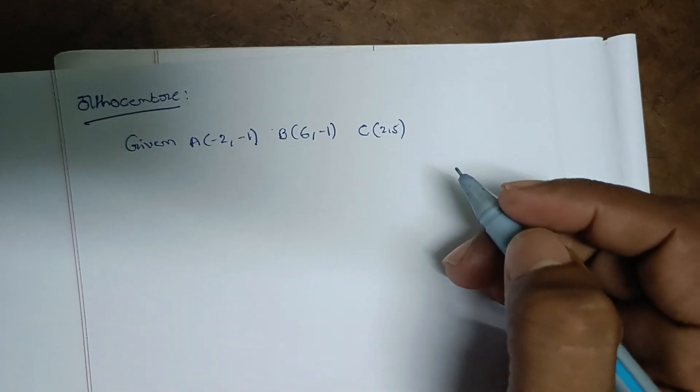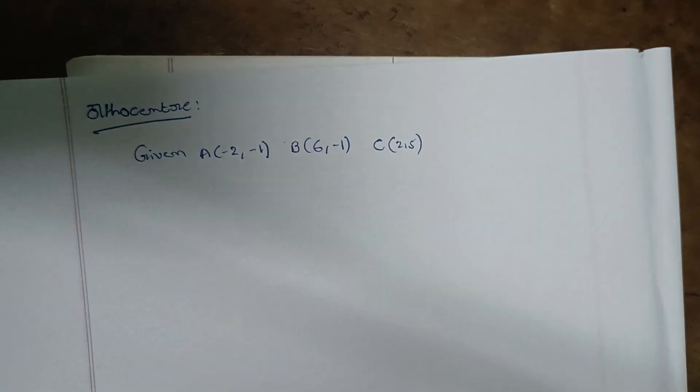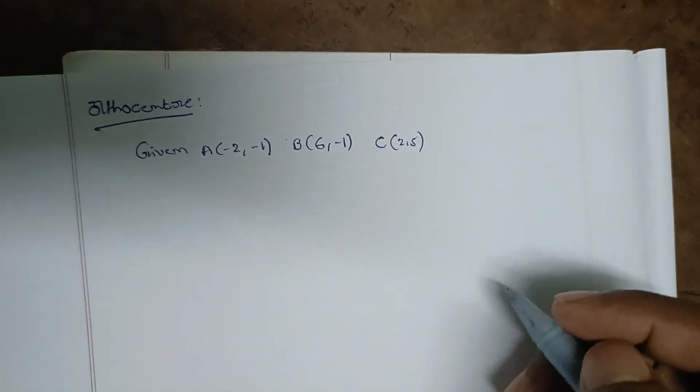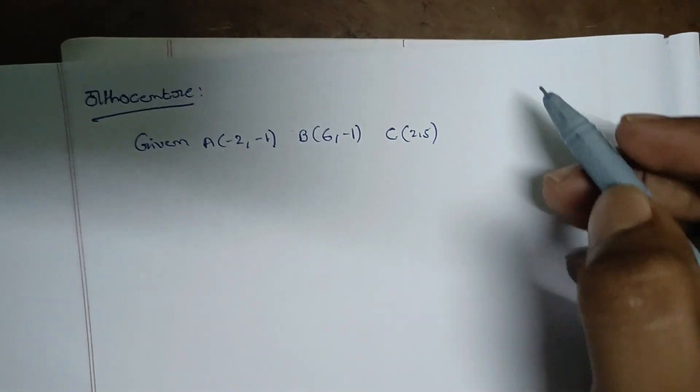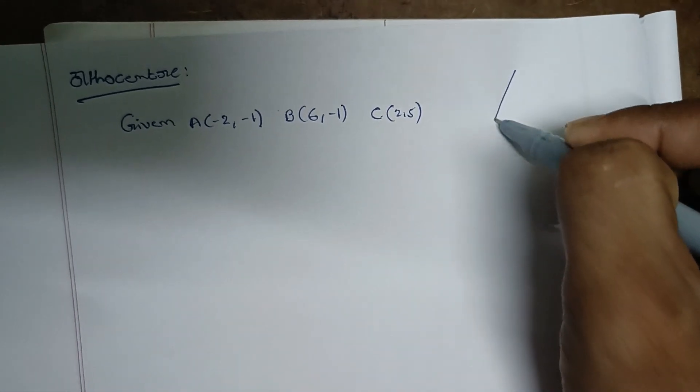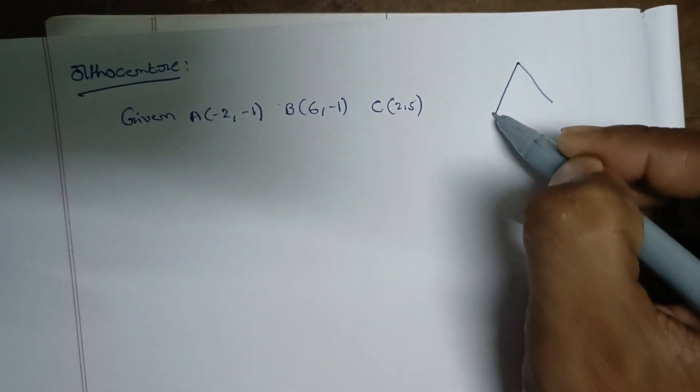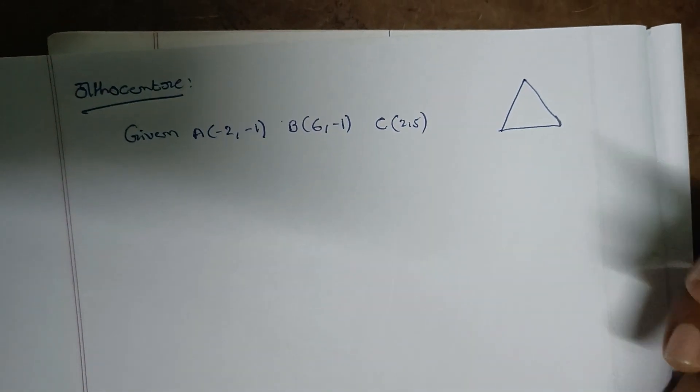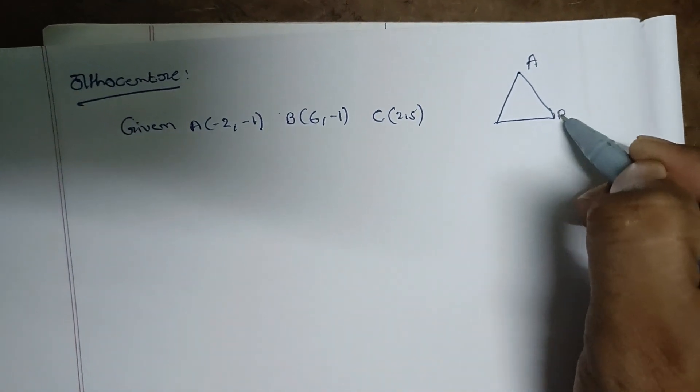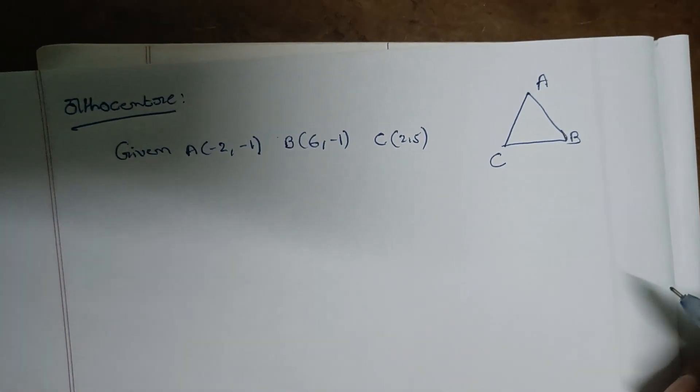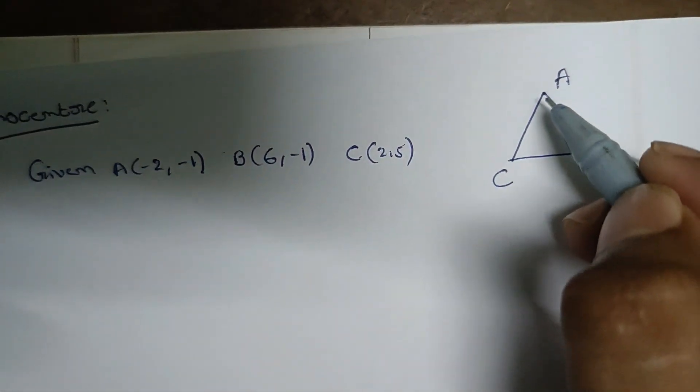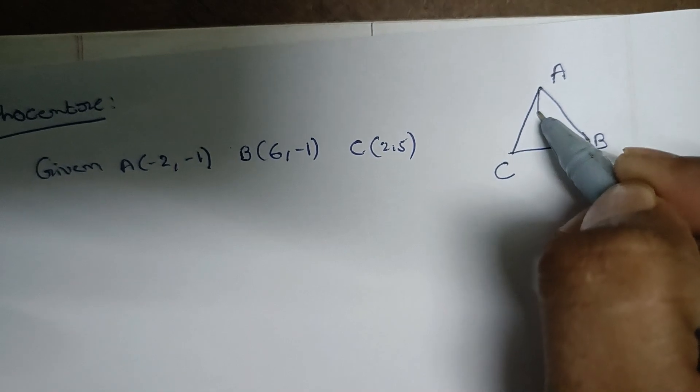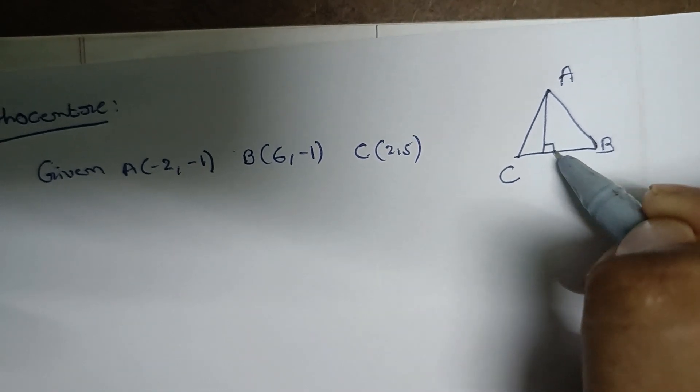Hi, good morning. This is an important essay question on orthocenter - how can we find the orthocenter? For example, take a triangle ABC with points A(2,-1), B(6,-1), C(2,6).